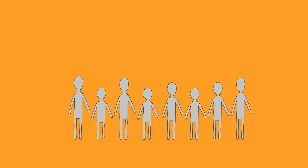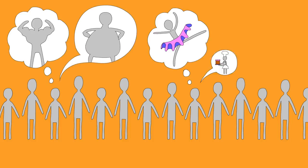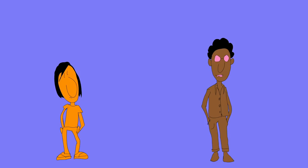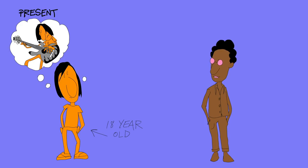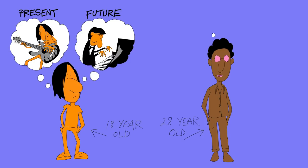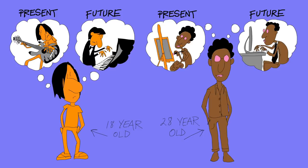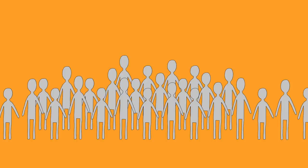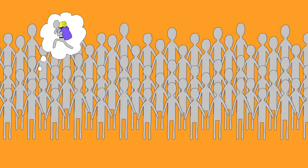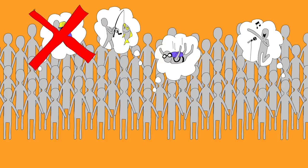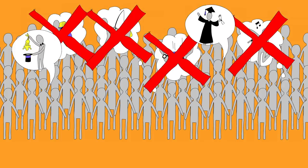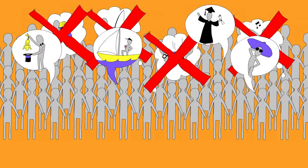For every age group in the sample, they compared the predicted changes to the reported changes. So they compared the degree to which 18-year-olds thought they would change to the degree to which 28-year-olds reported they had changed. Overwhelmingly, at all ages, people's future estimates of change came up short, compared to the changes their older counterparts recalled.